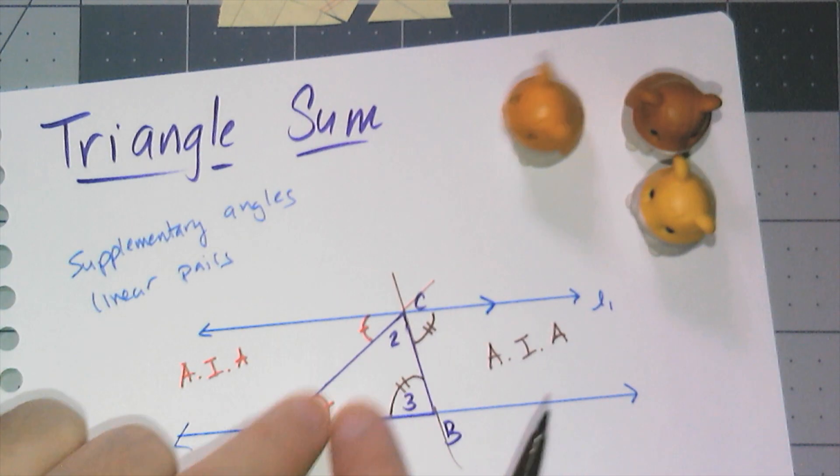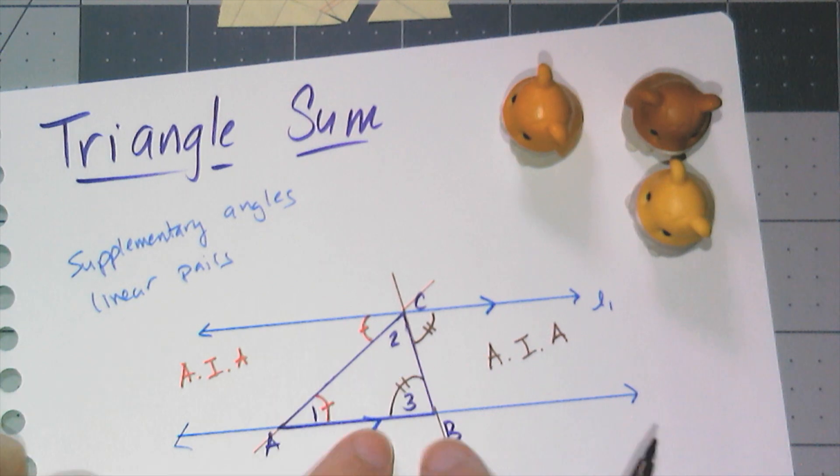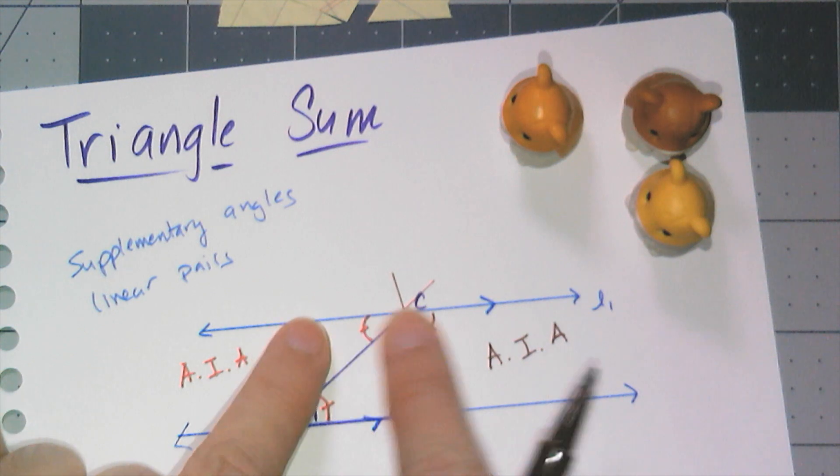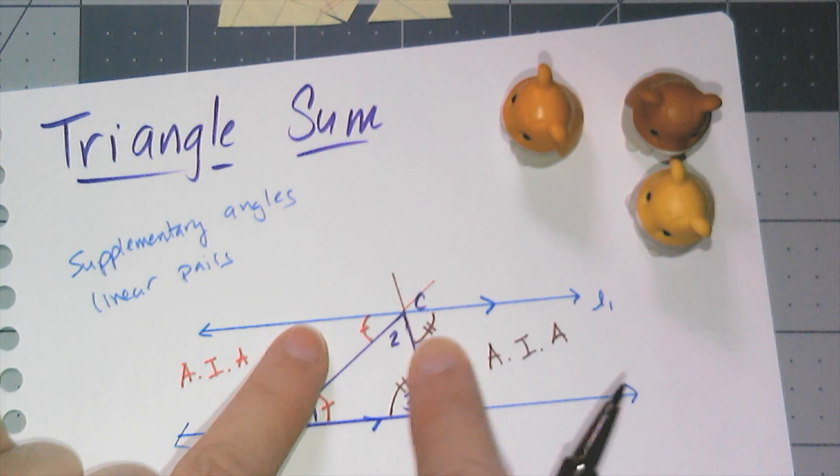And so now, oh wait, what do I have? Oh, that red angle moved up there. Angle three, equivalent moved up there. So now I have three angles that form a linear angle here. So I know these three angles have to add up to 180.